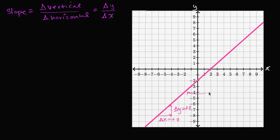So my change in y divided by change in x is two divided by two, which equals one. So for this line, the slope is equal to one. But what would a slope of two look like? Well, a slope of two should be steeper, and we could draw that.